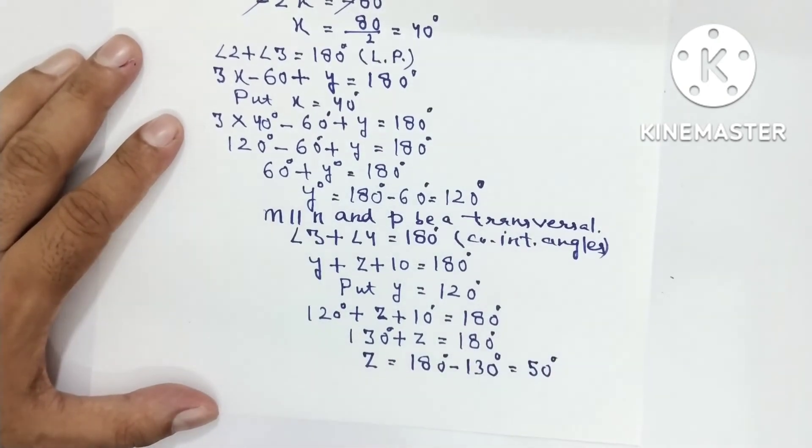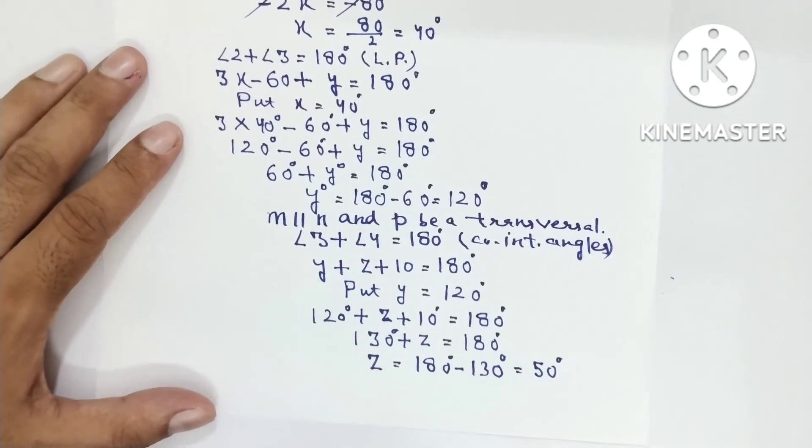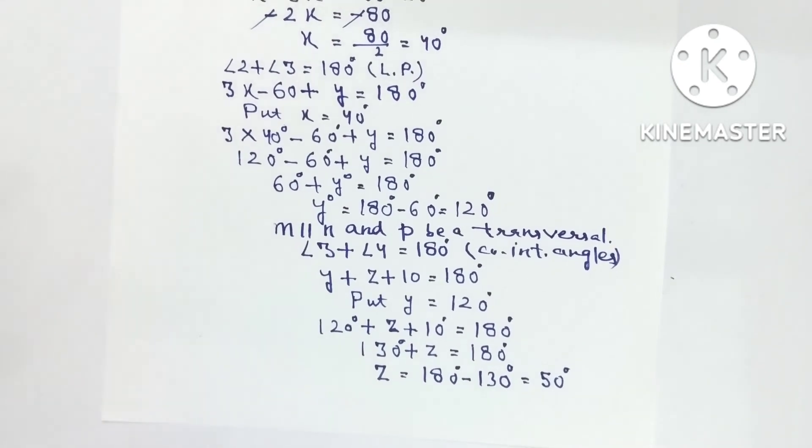So we have found X also, Y also and Z also. So these are the values. Hope you have understood the solution of this question, thank you.